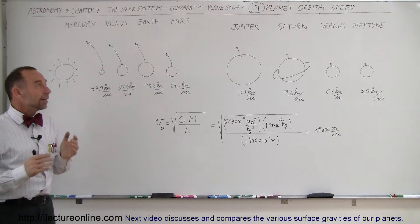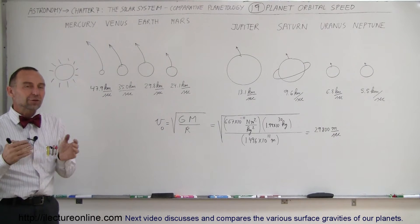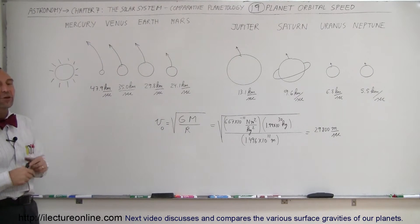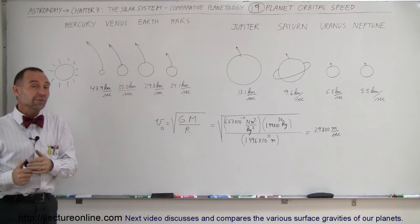Welcome to Electronline. Another interesting component of understanding our solar system is looking at the orbital speed of the various planets. It turns out the planets that are close to the sun move a lot faster than the planets that are far away from the sun.